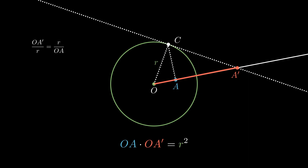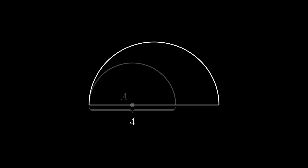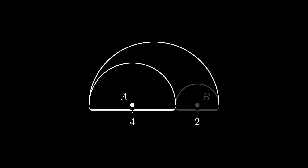Now let's jump into a problem. I got this problem from the Art of Problem Solving — see the link below — and I think it's a really powerful demonstration of this technique. Consider this semicircle with these semicircles inside it. Our job is to find the radius R of this circle centered at P.